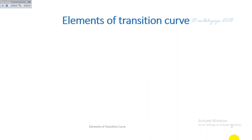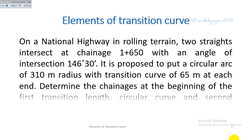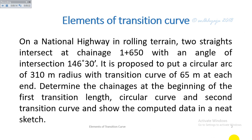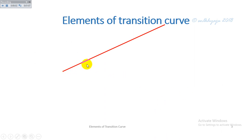Now let's go through an example. On a national highway in rolling terrain, two straights intersect at chainage 1650 meters with an angle of intersection of 146 degrees 30 minutes. It is proposed to put a circular arc of 210 meter radius with transition curves of 65 meters at each end. Determine the chainages at the beginning of the first transition, the circular curve, and the second transition curve, and show the computed data in a neat sketch.